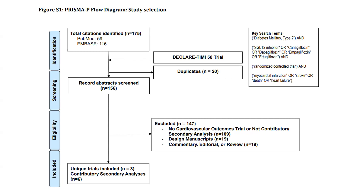This is the PRISMA flow diagram for study selection. There were 175 citations identified from PubMed and EMBASE. After removing duplicates, they screened 156 abstracts. They excluded 147 of them because they did not fit the outcomes of interest or the population they were interested in. Three unique trials were included in the analysis, and a contributory secondary analysis was done with six trials.